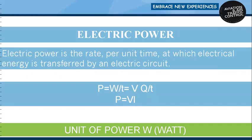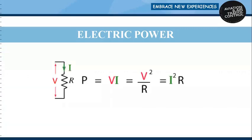Power equals voltage multiplied by current. The unit of power is the Watt, represented by capital W. The formula for power is P = VI. If we replace I using Ohm's law, I = V/R, it becomes V squared over R. Similarly, replacing V as IR, power becomes I squared times R.